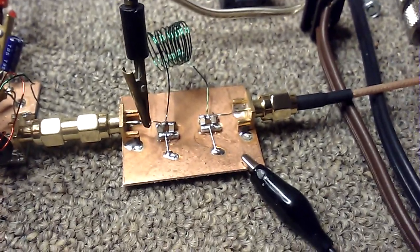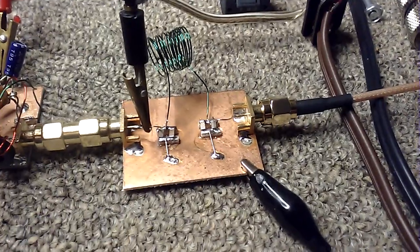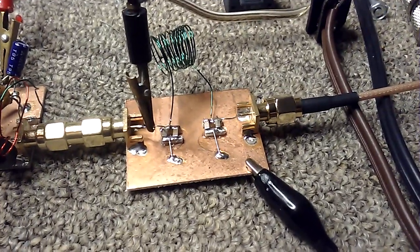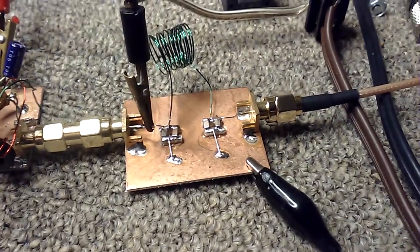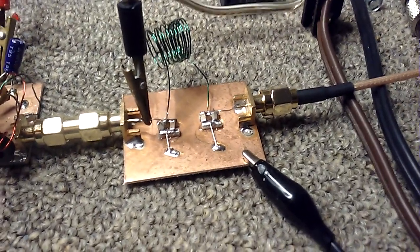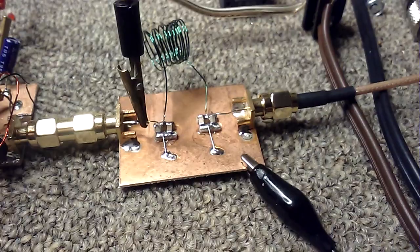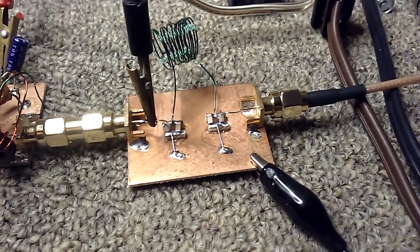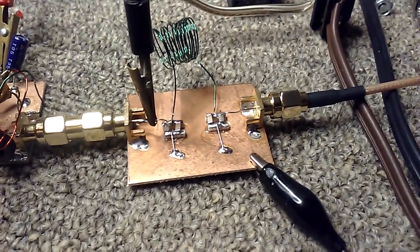And we've added a PI network filter, which consists of a 2 microhenry air wound inductor and two sets of capacitors, 800 picofarad on each side of the inductor.